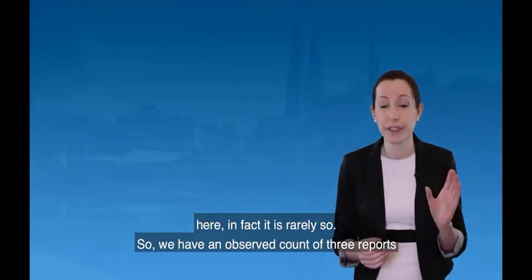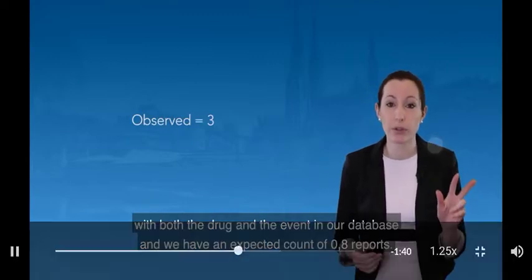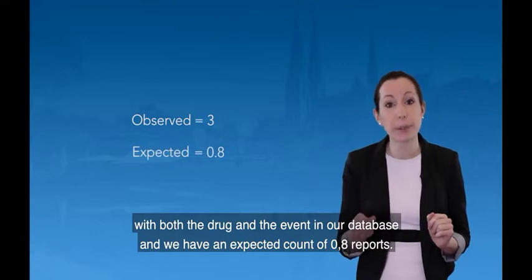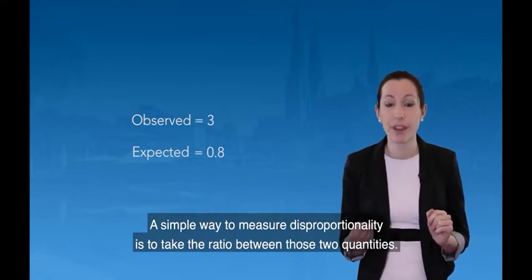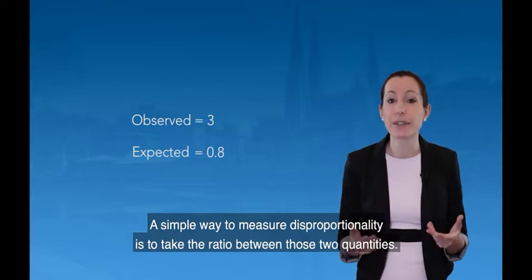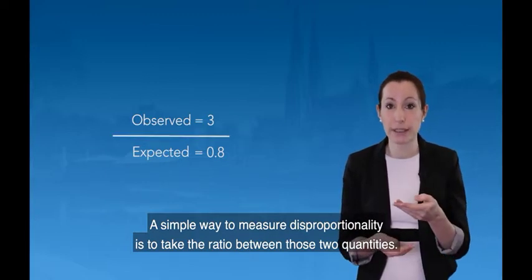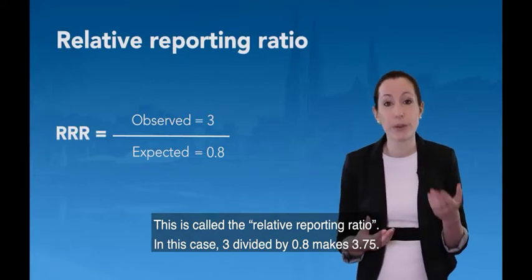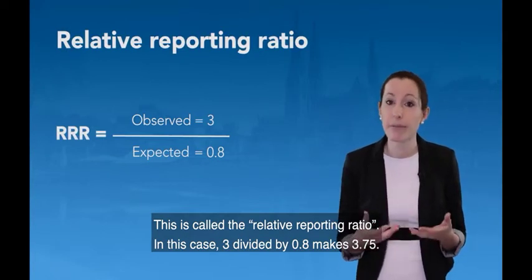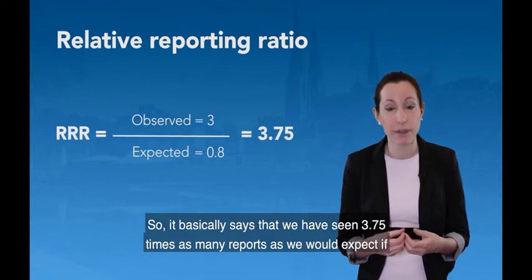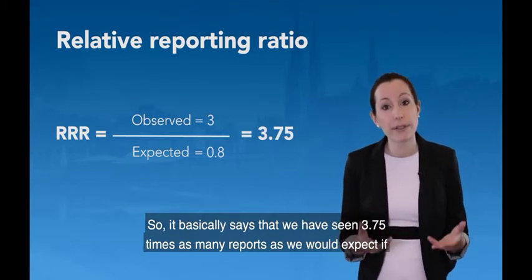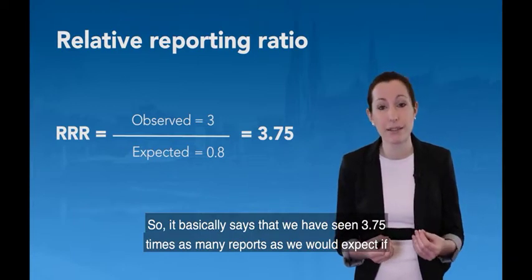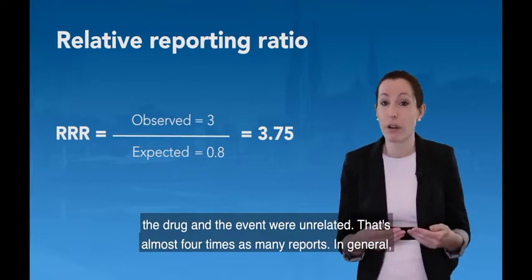So we have an observed count of three reports with both the drug and the event in our database, and we have an expected count of 0.8 reports. A simple way to measure disproportionality is to take the ratio between those two quantities. This is called the relative reporting ratio. In this case, 3 divided by 0.8 makes 3.75. So it basically says that we have seen 3.75 times as many reports as we would expect if the drug and the event were unrelated.